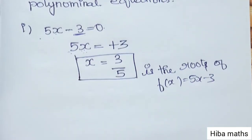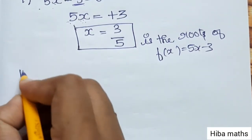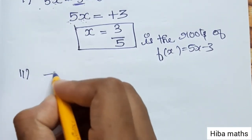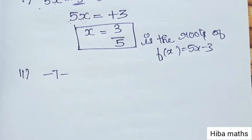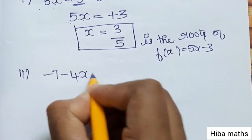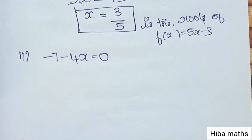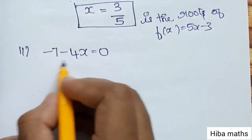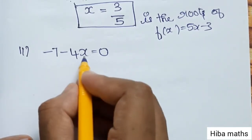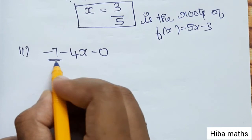Second equation: -1 - 4x = 0. The sum has minus, so in the second step, we add 1 to both sides. -4x = +1. That is the answer.